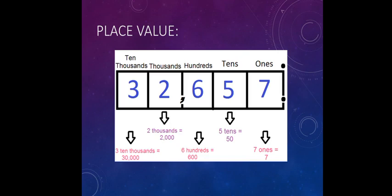The example number is 32,657. The ones place is 7, so there are 7 ones. Next, 5 tens, so 5 into 10 makes 50. Next, 6 hundreds, 6 into 100 is 600.